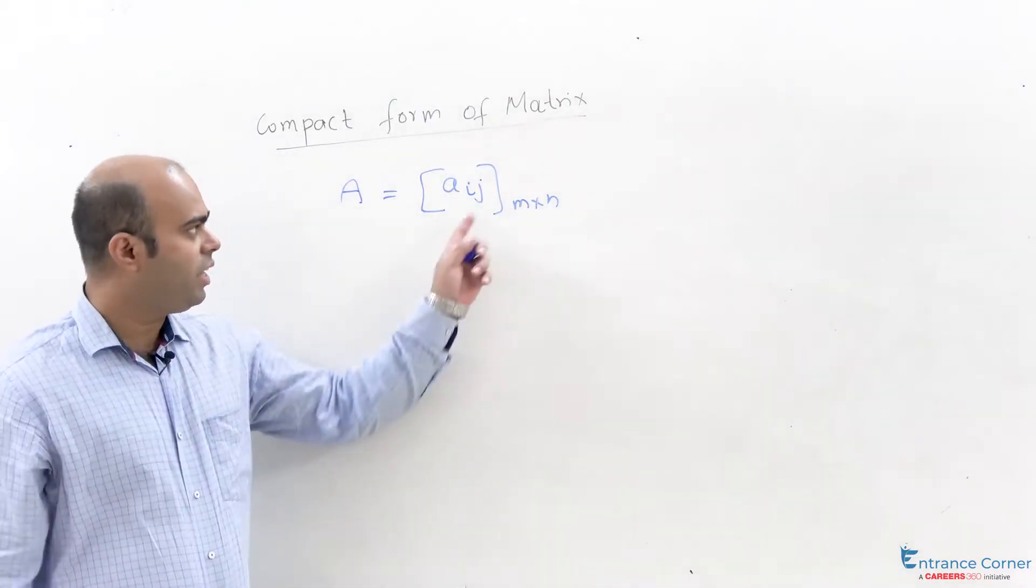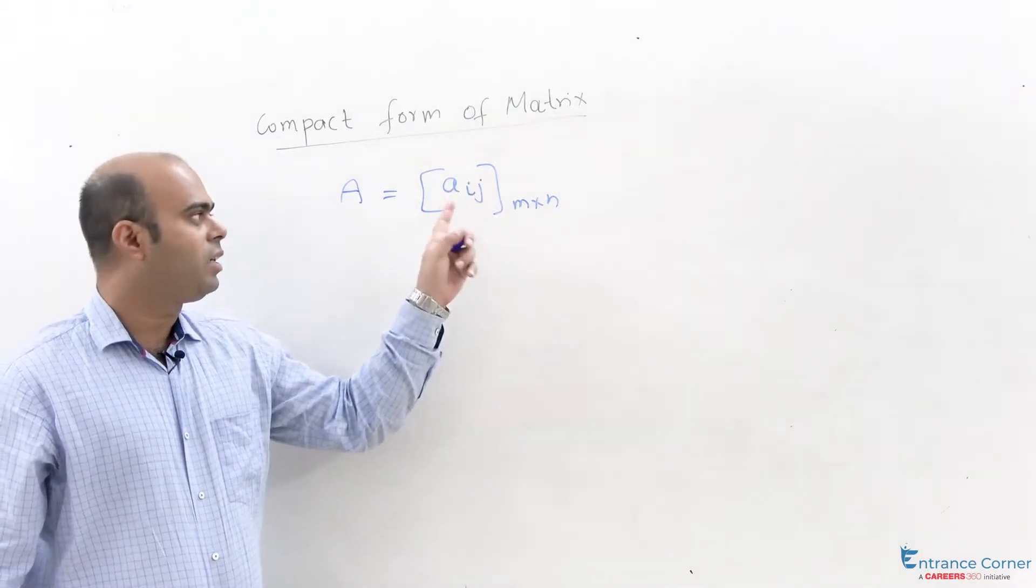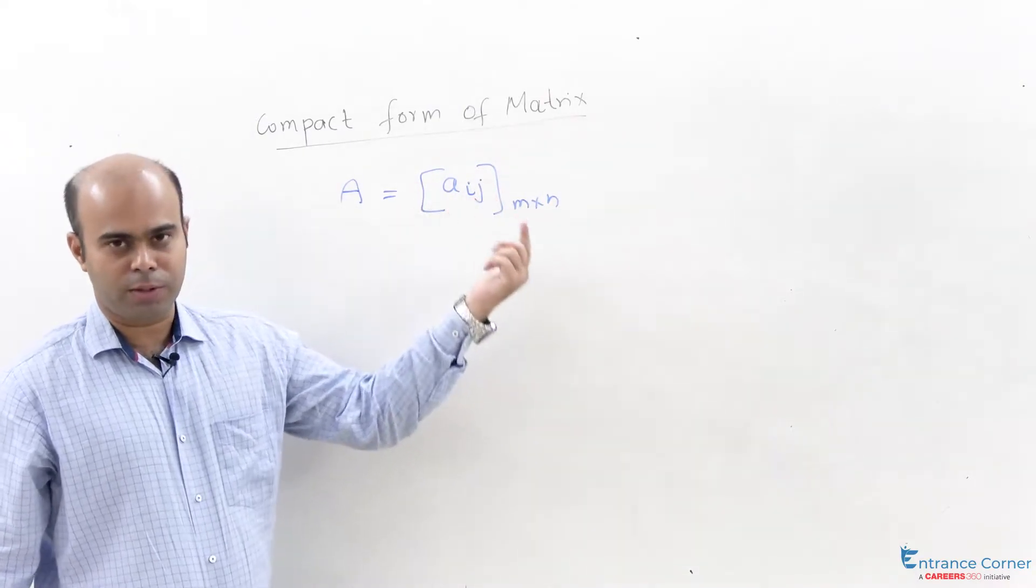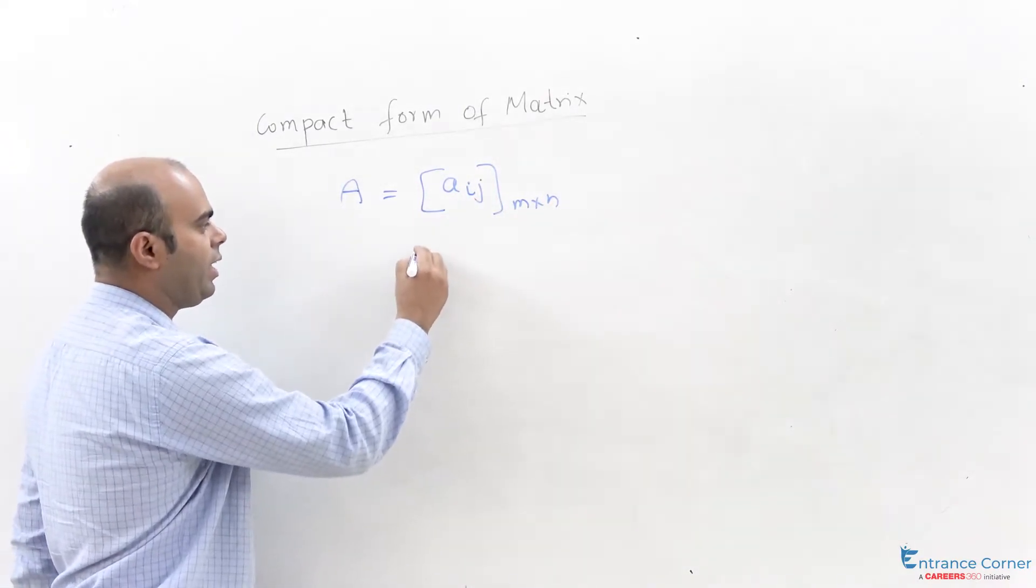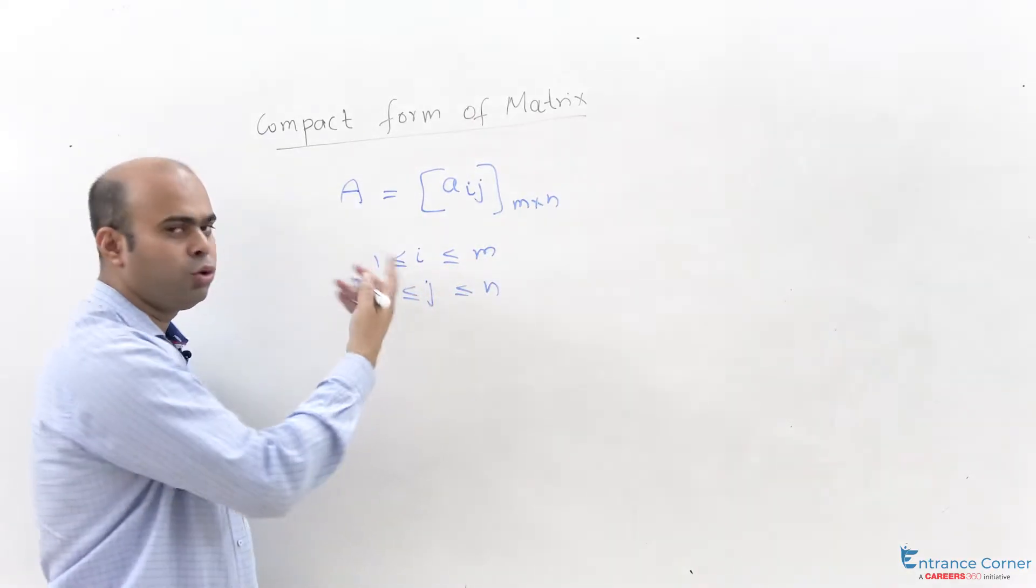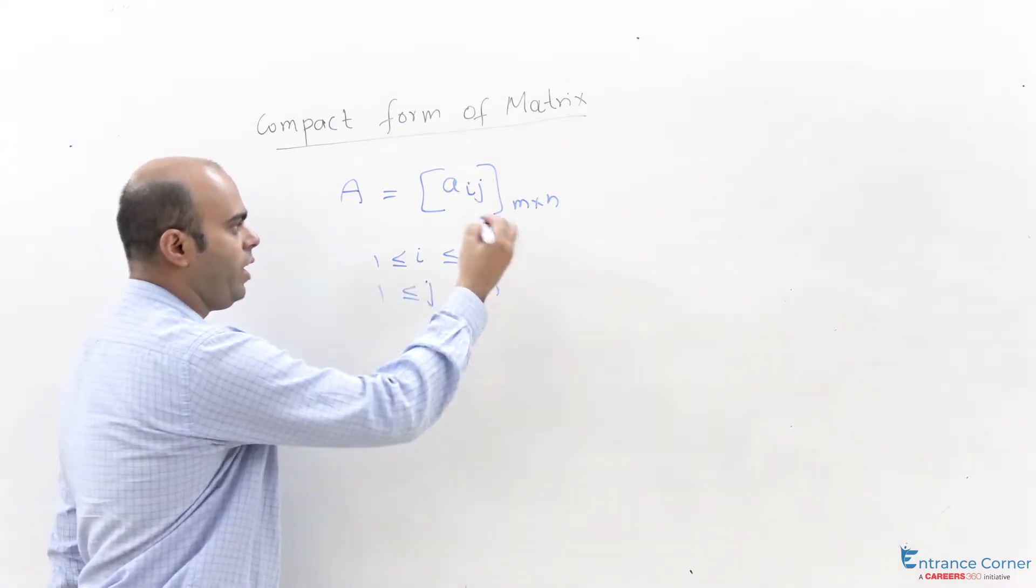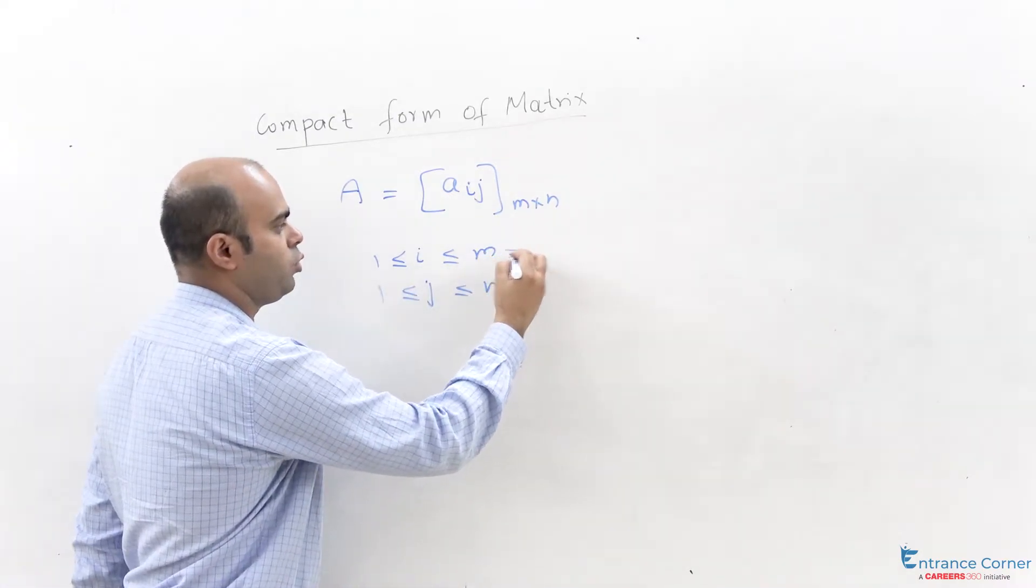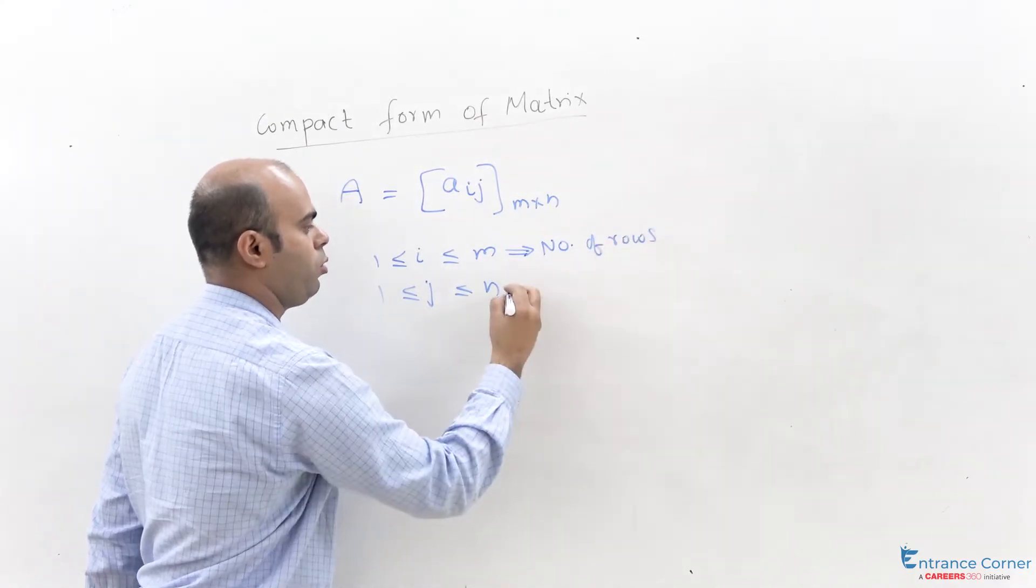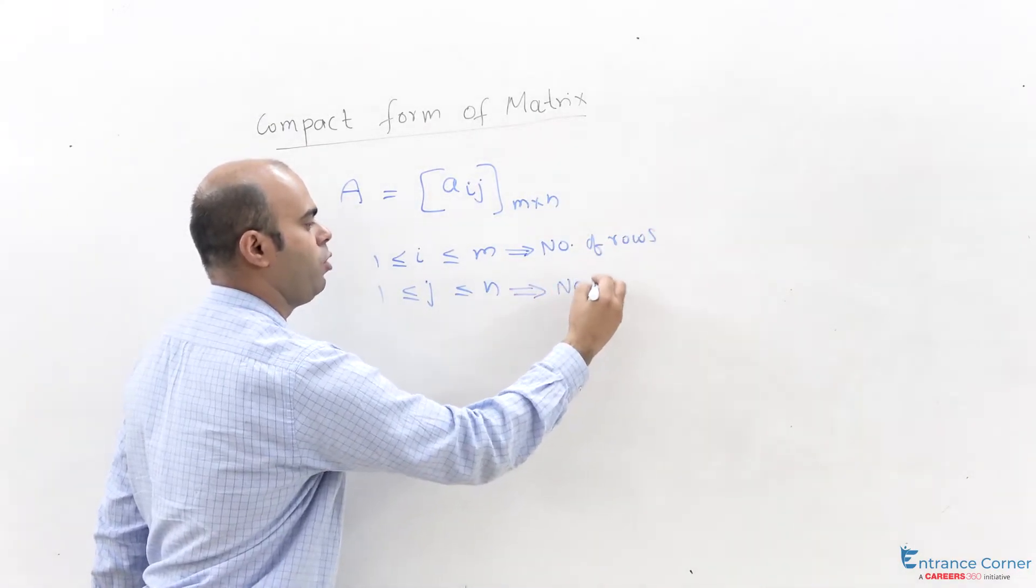Basically aij is an element of matrix and as we vary i and as we vary j we get different elements of the matrix. So i can take the value from 1 to m and j can take the value from 1 to n. That means when we talk about m this is your number of rows and when we talk about n this is number of columns.